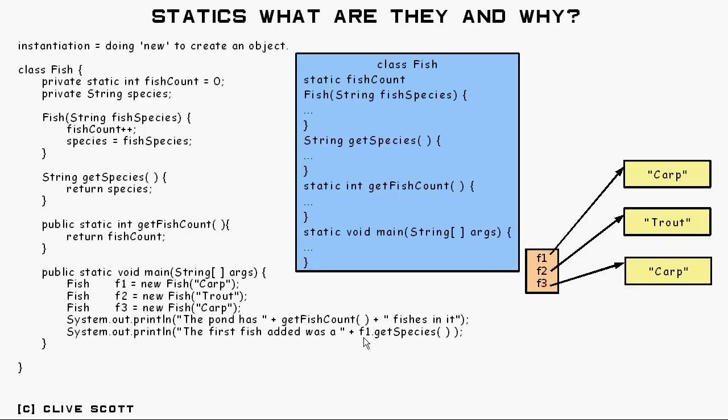And when you do something like f1.getSpecies, that f1 in front is being passed in as the hidden parameter, and that's what's being used here to obtain the species. It uses the reference to that thing that's passed in to get it. And it uses it to access any other instance data too. And if this method happened to call another non-static method in Fish, it would pass its hidden parameter onto that so that the called method would have access to the same object, and that's how it's done.